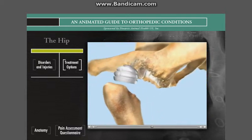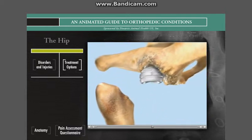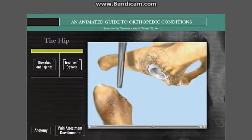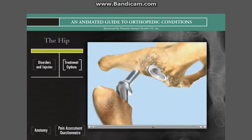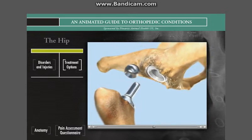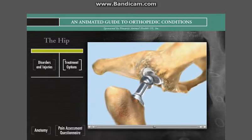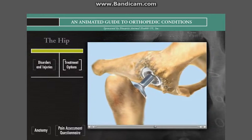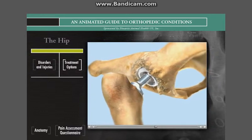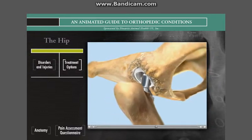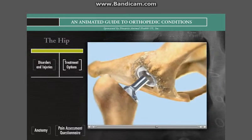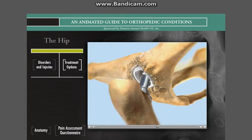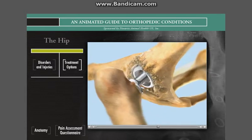By substitution of a prosthesis for the acetabulum as well as for both the femoral head and neck, normal weight-bearing activities can be maintained, but without the anatomical structures responsible for generating pain and restricting range of motion.